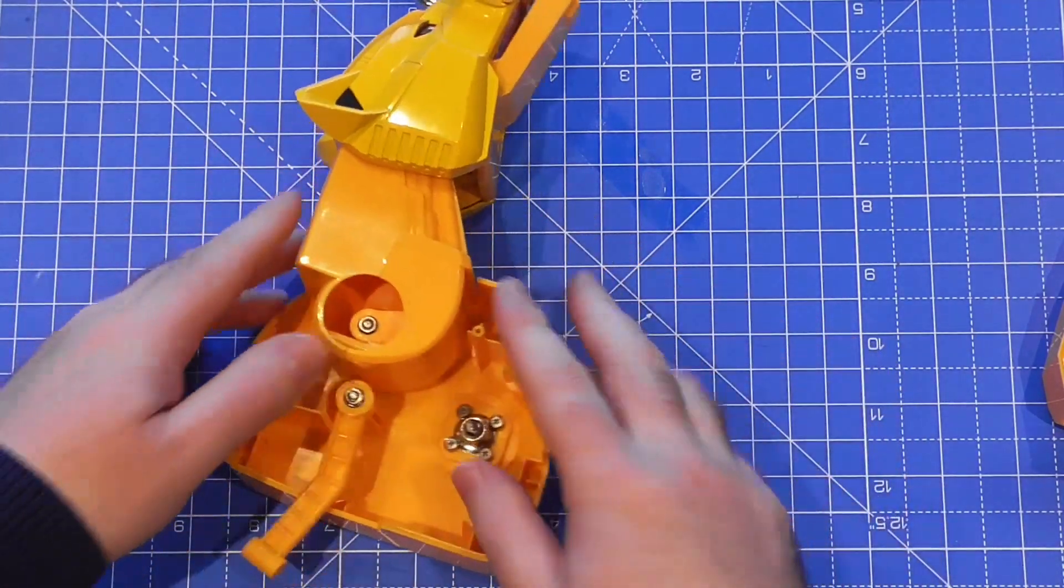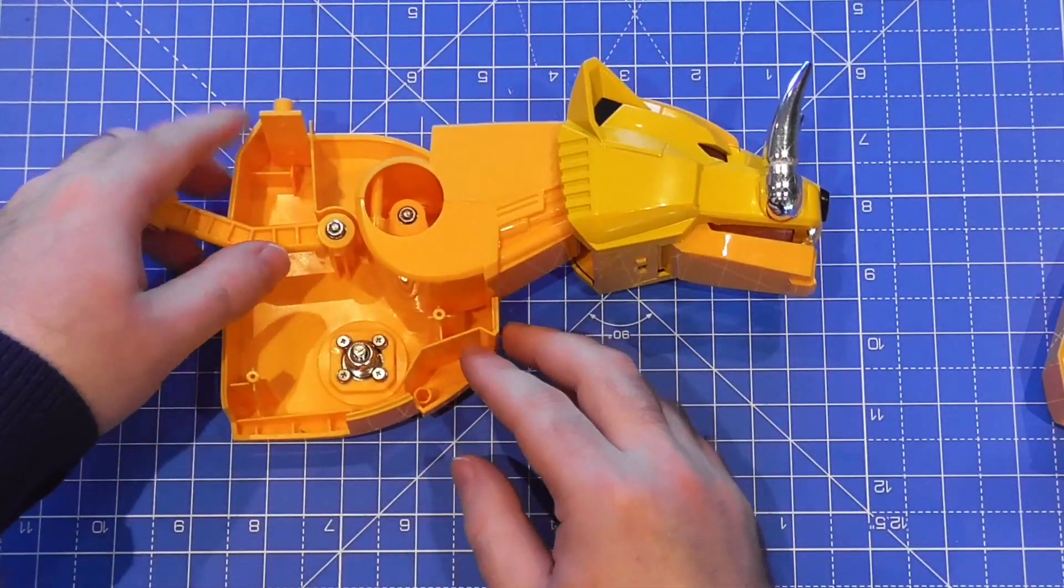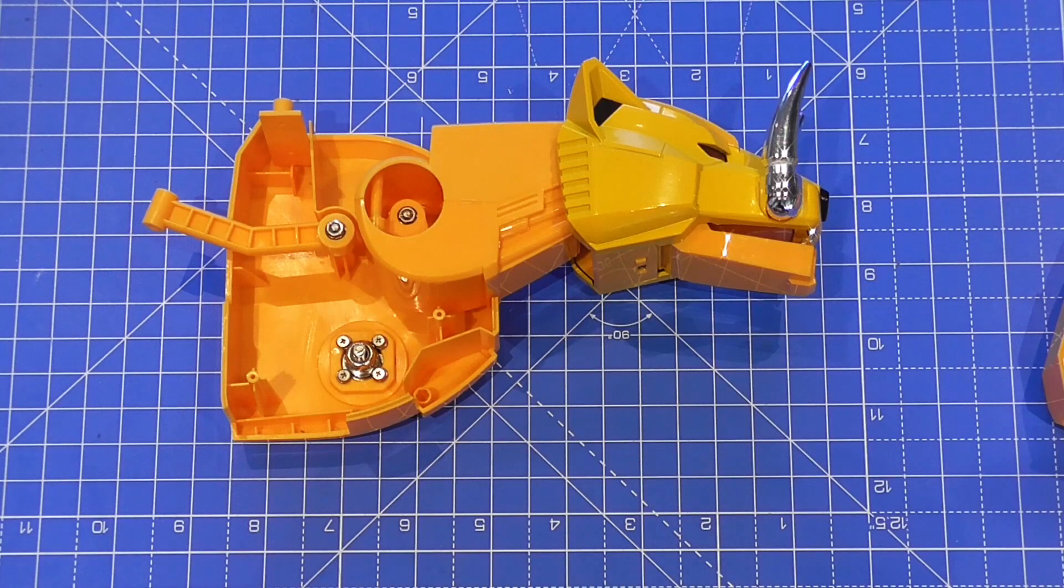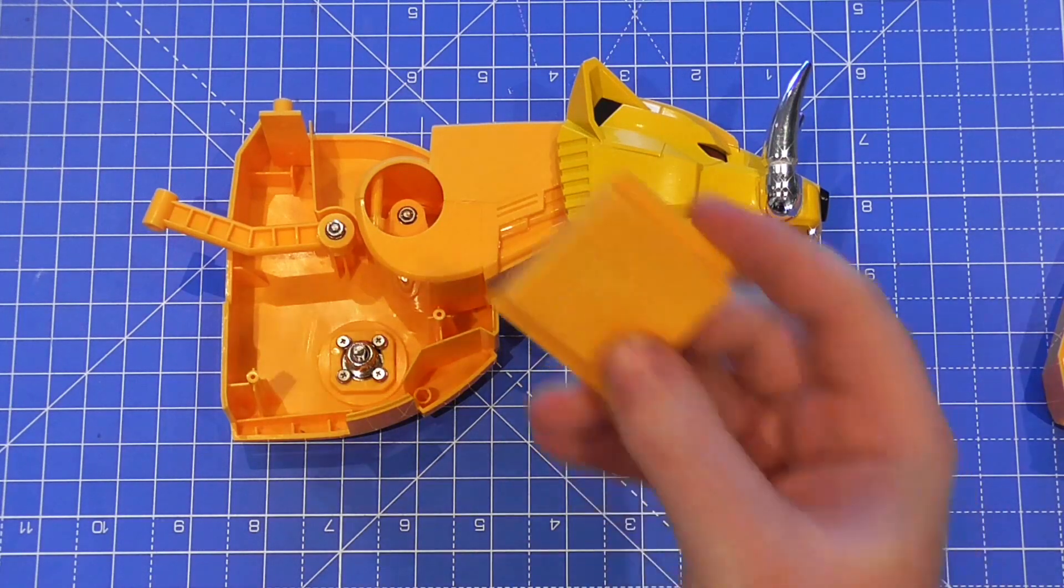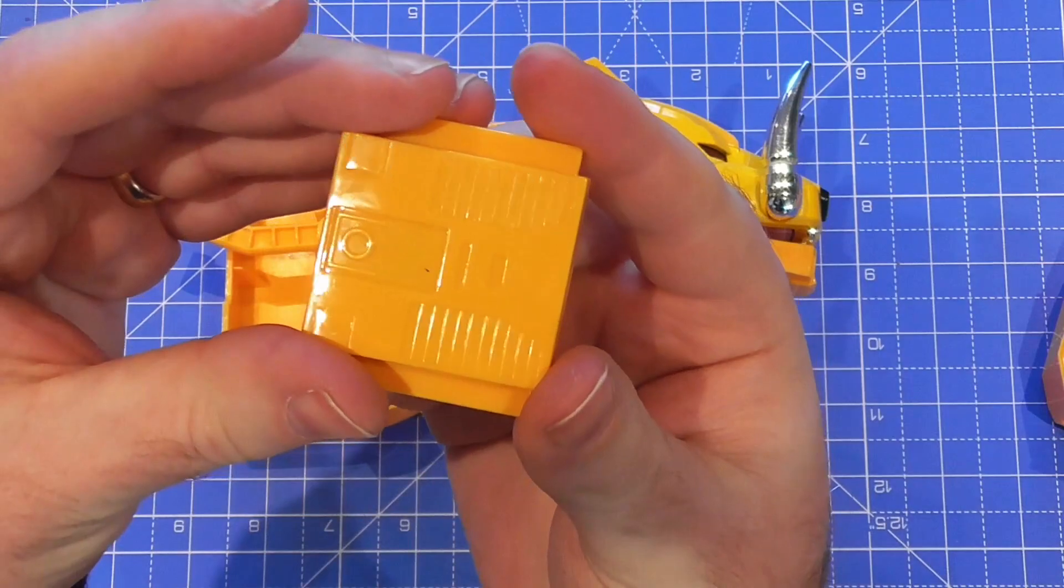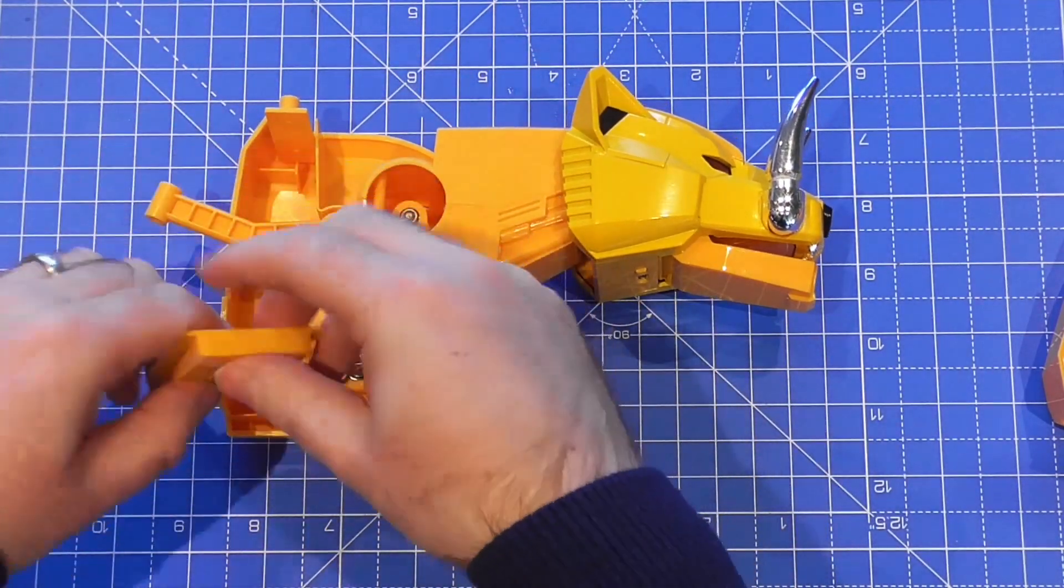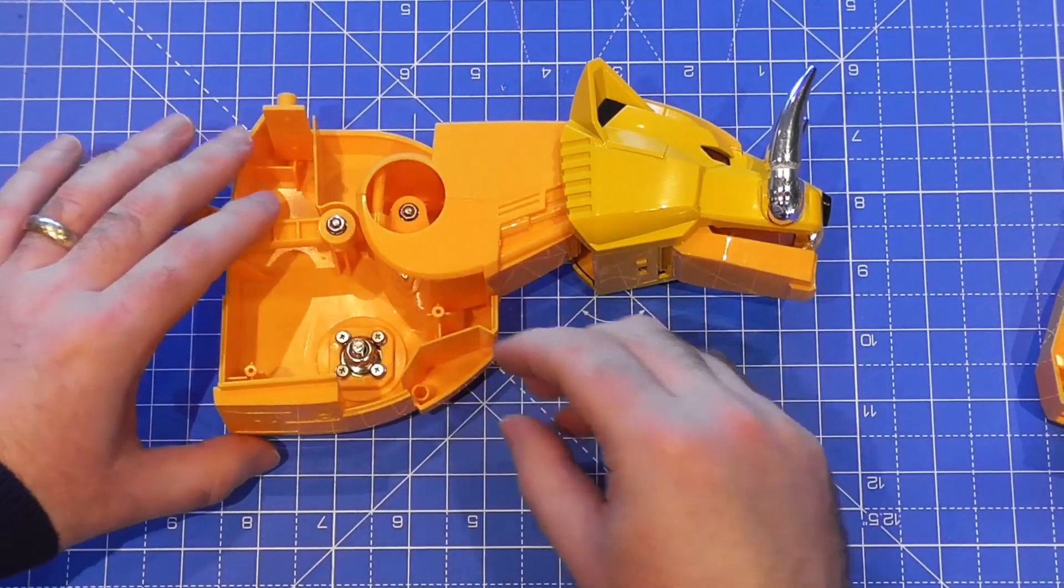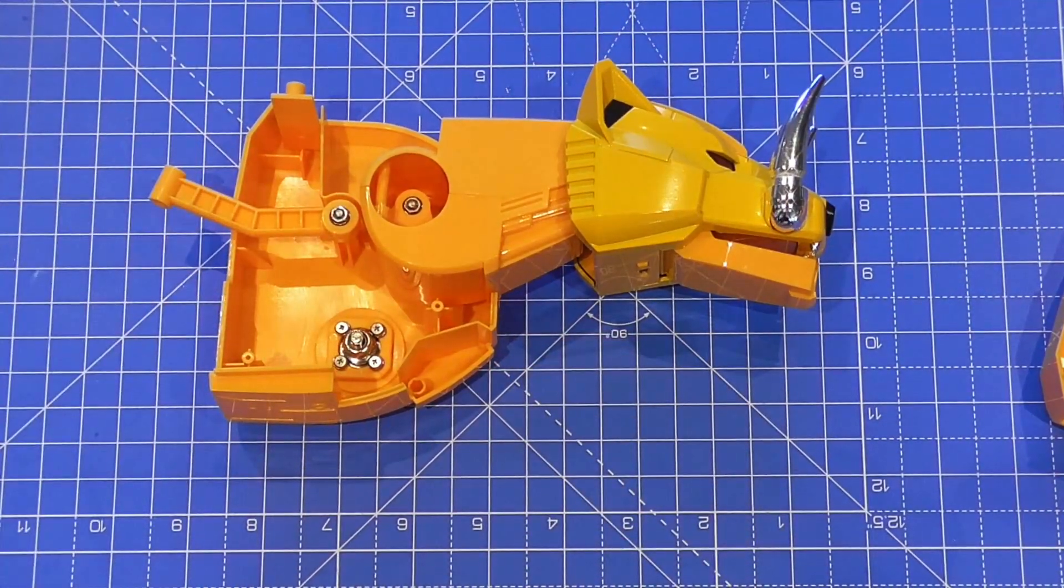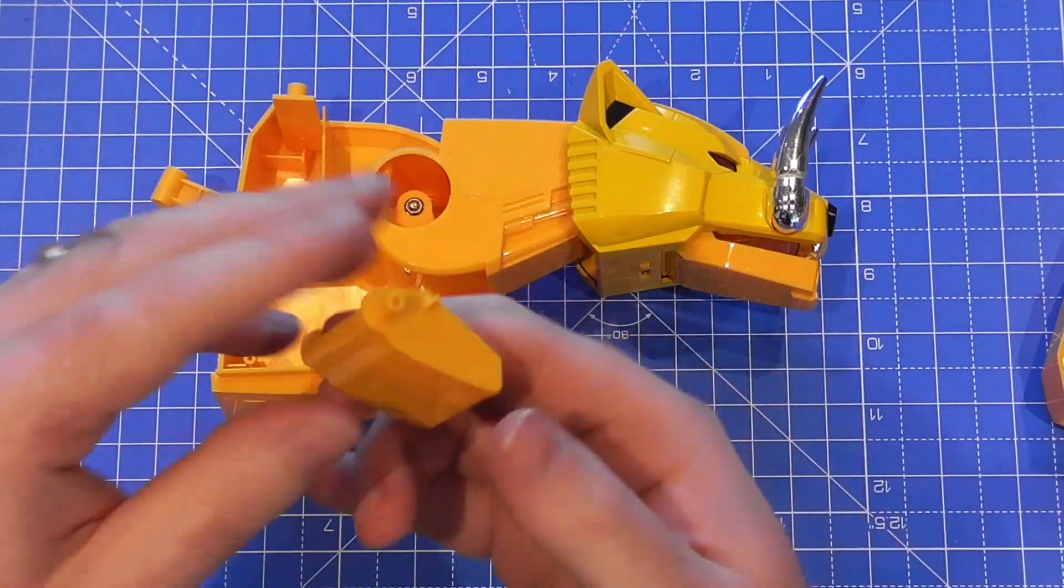The other parts we get in this issue are this part here, which has some lovely detailing on the bottom. That for the time being just slots into here, so I can get the angle right there. And then we also get this part here, which is the heel part for when this Zord is in foot mode.